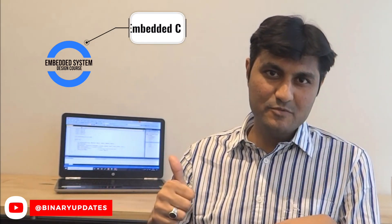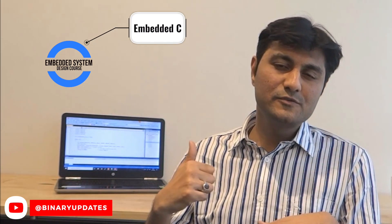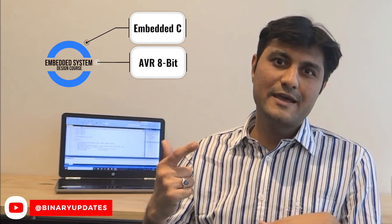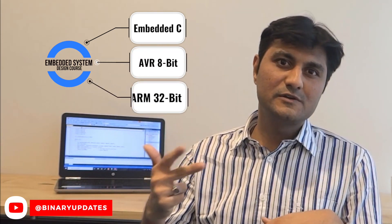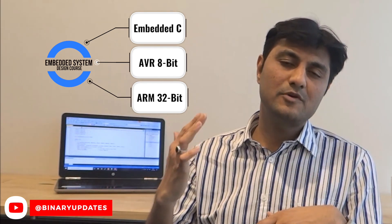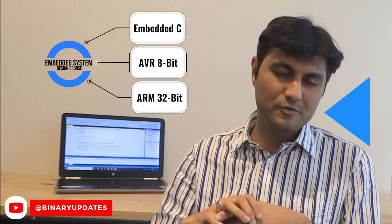This course breaks down into three modules. In the first module we're going to learn embedded C programming. In the second module we're going to learn about 8-bit AVR microcontrollers. And in the third module you're going to learn 32-bit microcontroller programming with the help of the STM32 microcontroller. We will learn everything from scratch all the way to advanced topics in embedded systems.